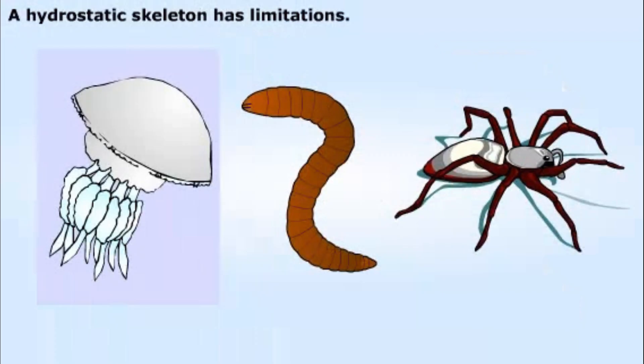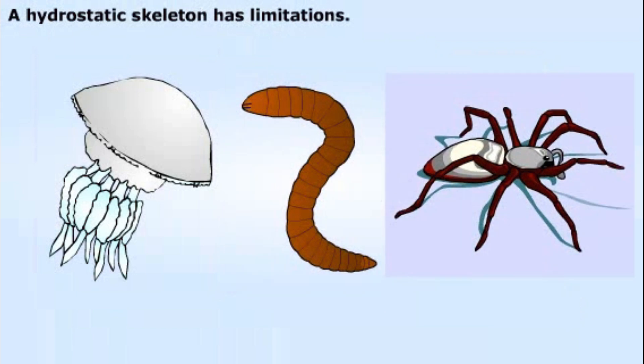The hydrostatic skeleton is well-suited for some aquatic organisms and for land animals that crawl or burrow. But for terrestrial animals, a hydrostatic skeleton can't keep parts of the body off the ground very effectively. Since many land animals move by lifting parts of their bodies off the ground, they need a more rigid support system.